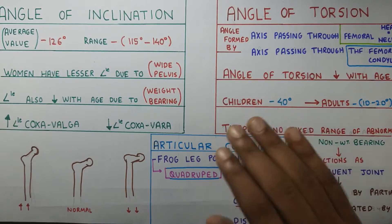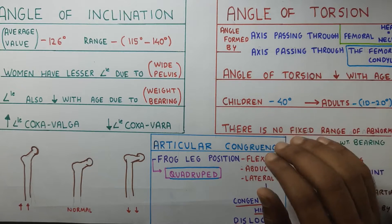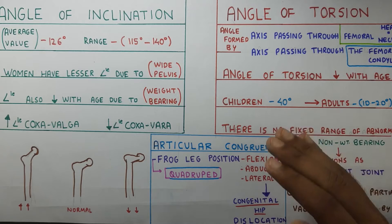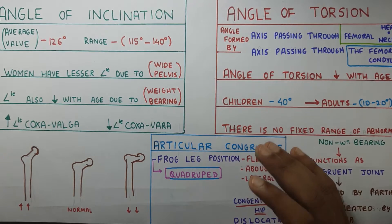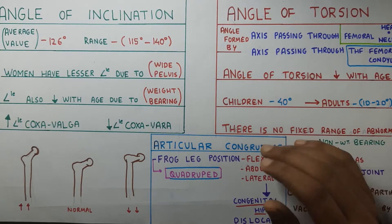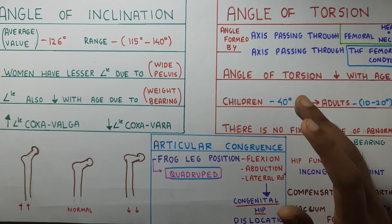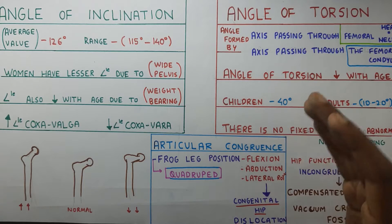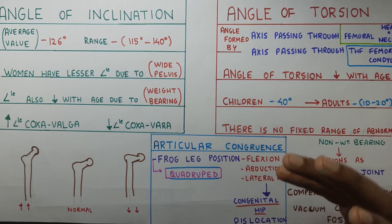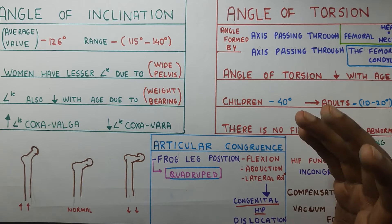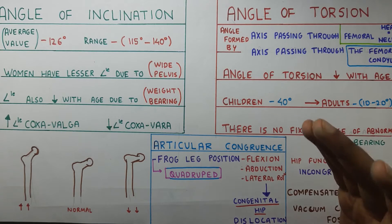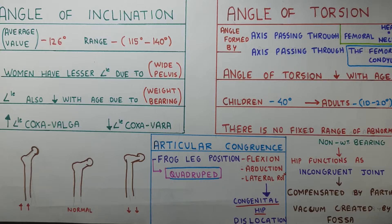The angle of torsion reduces with age. In children it can be around 40 degrees, while in adults it becomes around 10 to 20 degrees. There is no fixed range for an abnormal angle of torsion, but in hip dysplasia an angle of around 42 degrees plus or minus 16 degrees was noticed. In children, angles more than 30 degrees were seen in CP children. So that's where you can draw a rough line for abnormal angle of torsion.